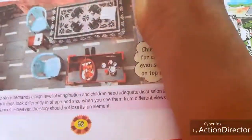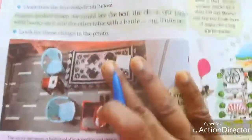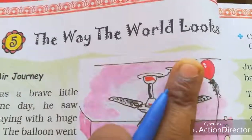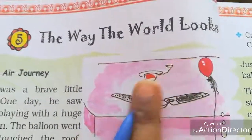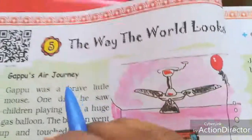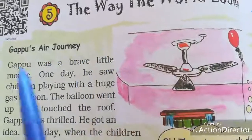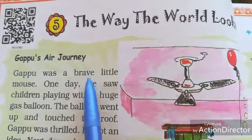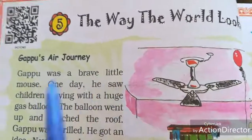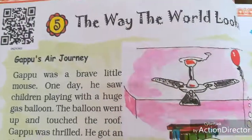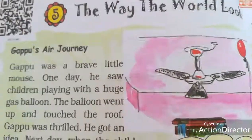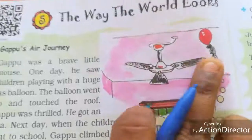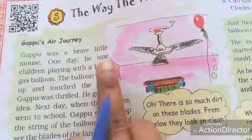Open your book to page number 52. The lesson is named 'The Way the World Looks.' Gappu's Ear Journey. Gappu was a brave little mouse — here, Gappu is a little mouse. You can see Gappu here.